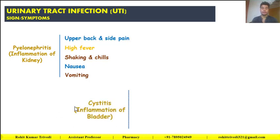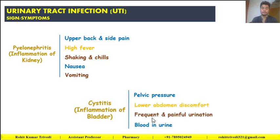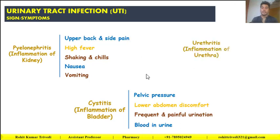The second is cystitis — inflammation of the bladder. The patient may feel pelvic pressure, lower abdomen discomfort, and frequent and painful urination. Blood in the urine may also be a sign that the person is suffering from urinary tract infection. The third category is urethritis — inflammation of the urethra. A burning sensation during urination may indicate urinary tract infection.